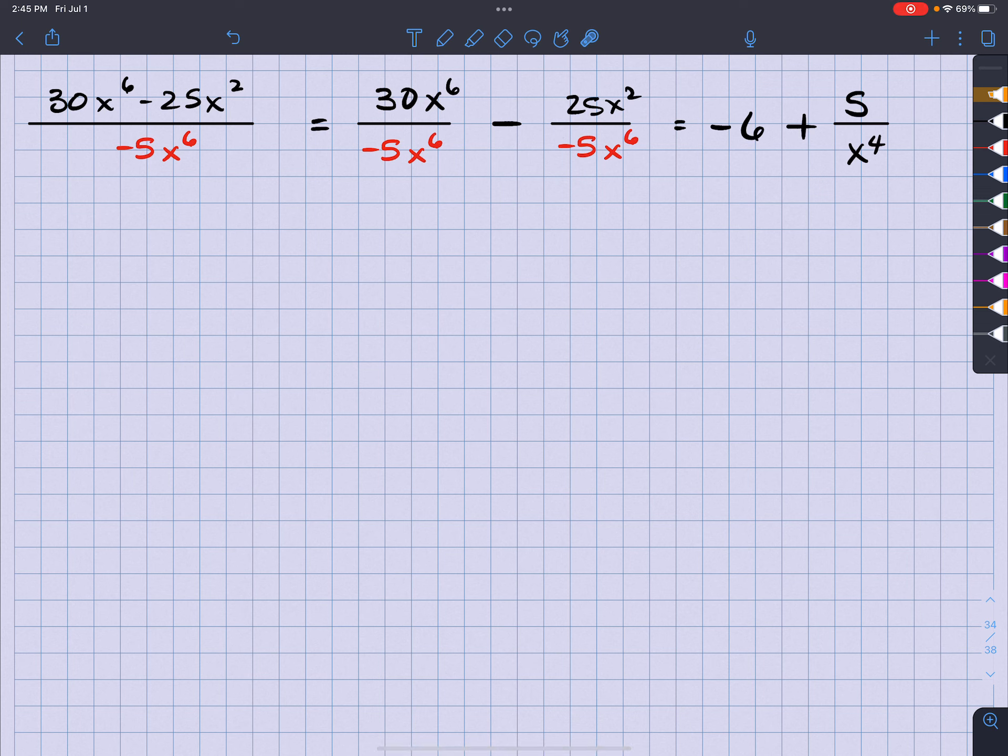Because I have 2 x's on top, 6 x's on the bottom. 2 of them will cancel out. There will be 4 extras left on the bottom.